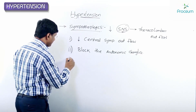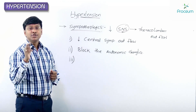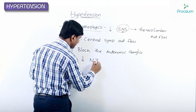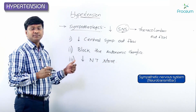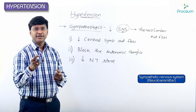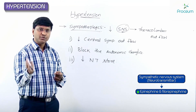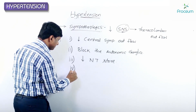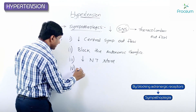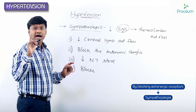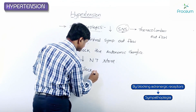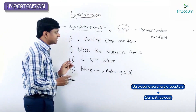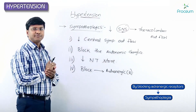The third group of drugs that cause sympathoplegia are those that deplete the neurotransmitter store. Since epinephrine and norepinephrine are very important for the sympathetic nervous system, drugs that reduce these neurotransmitters can achieve sympathoplegia. The fourth group achieves sympathoplegia by blocking the adrenergic receptors.